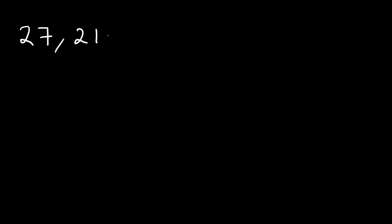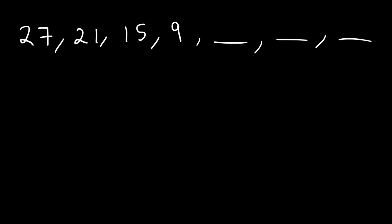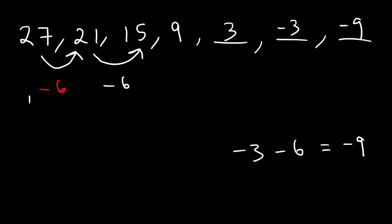Here's a different example: 27, 21, 15, and 9. Find the next three terms in the sequence. So what is the common difference? If we take the second number and subtract it by the first number we're going to get negative 6. So therefore the common difference is negative 6. If you add negative 6 to 27 you're going to get 21, and if you add another negative 6 to 21 it will give you 15. 15 minus 6 is 9. 9 minus 6 will give us the next number 3. Then 3 minus 6 will give us negative 3. And then negative 3 minus 6 will give us negative 9. So this is another arithmetic sequence.